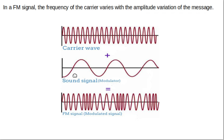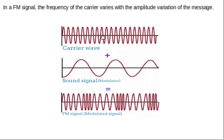As the amplitude of the message varies, the frequency of the carrier varies accordingly, giving us an FM signal. Here we see an FM signal — a modified carrier whose frequency varies continuously according to the variation of the amplitude of the message signal. When the amplitude of the message increases, the frequency of the carrier increases from its original value.